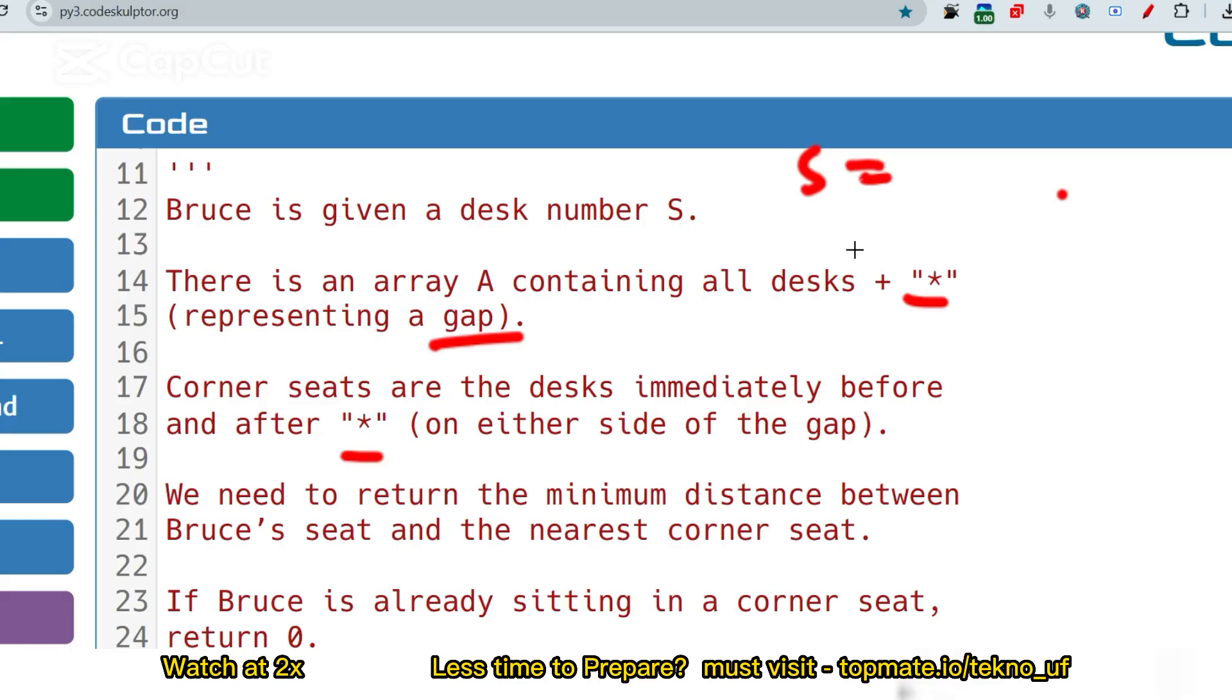Now we need to return the minimum distance between Bruce's seat and the nearest corner seat. If Bruce is already sitting in a corner seat, return zero.